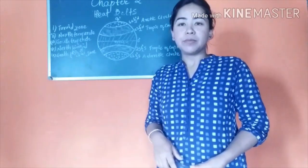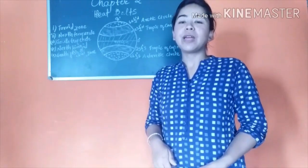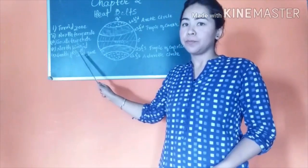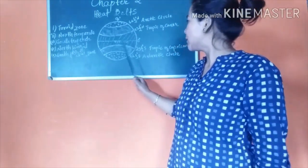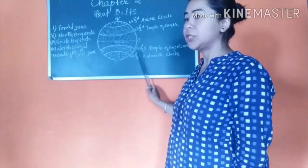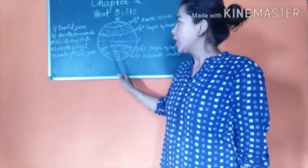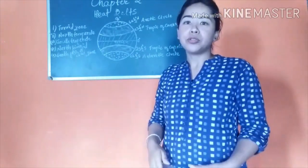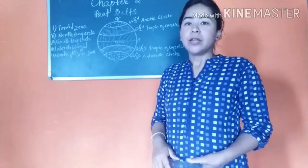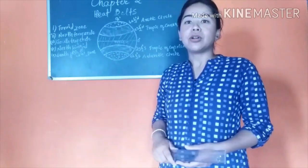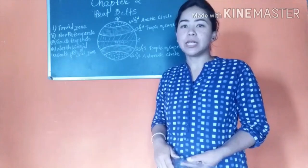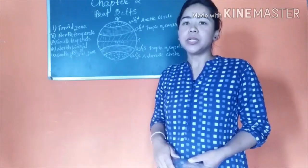On the basis of difference in temperature, the earth is divided into five heat zones: one torrid zone, two temperate zones, and two frigid zones. The torrid zone lies between the Tropic of Cancer (22.5° North) and the Tropic of Capricorn (22.5° South). This zone is also known as the hot zone or the hot belt because it experiences the highest temperature, receiving vertical or direct rays of the sun. The average temperature is 25°C to 30°C.